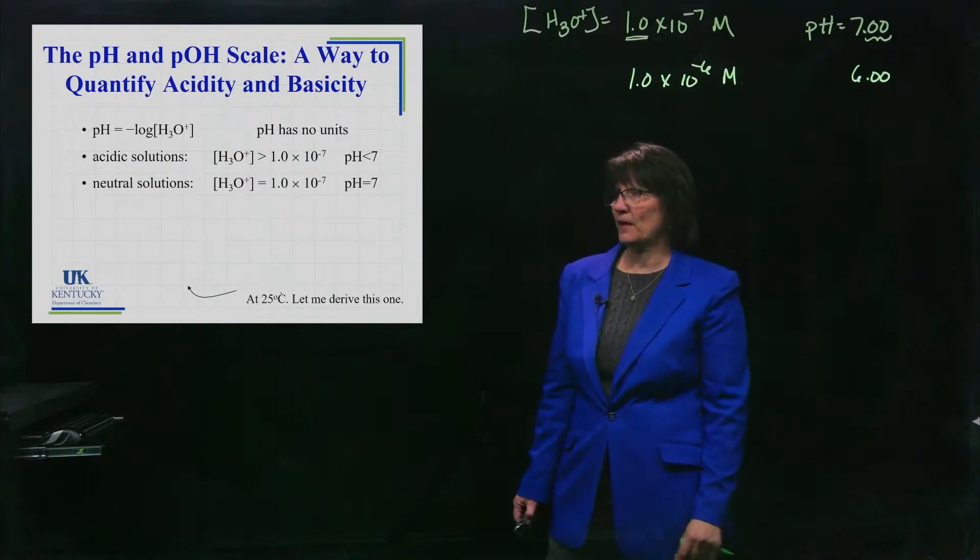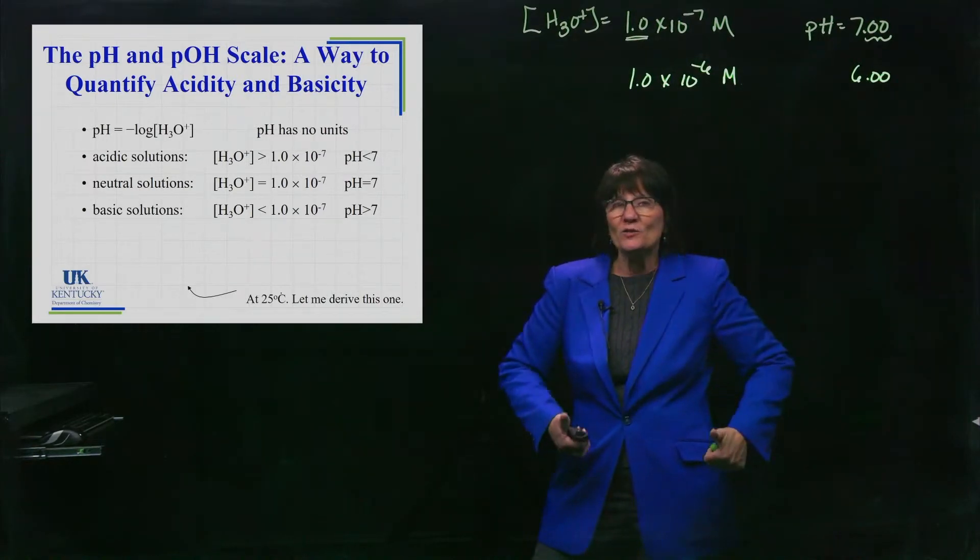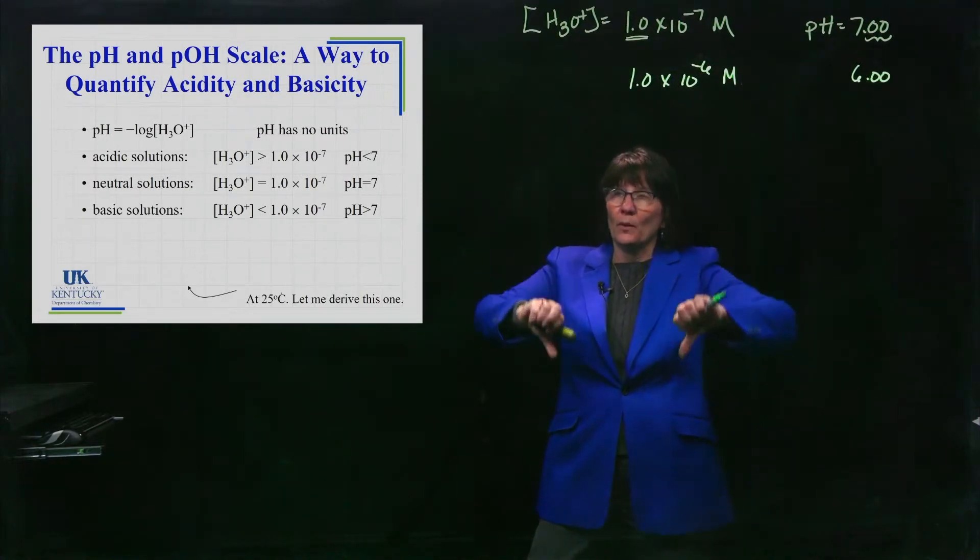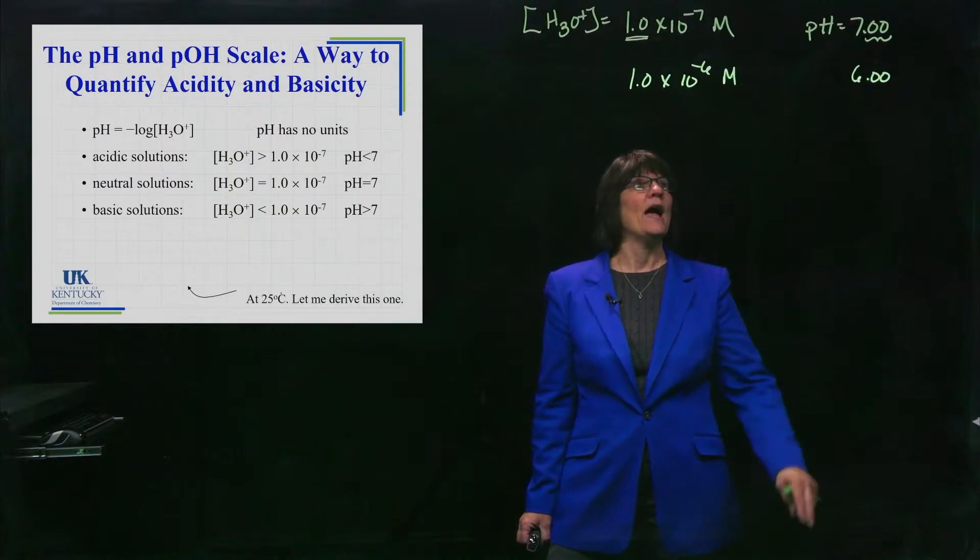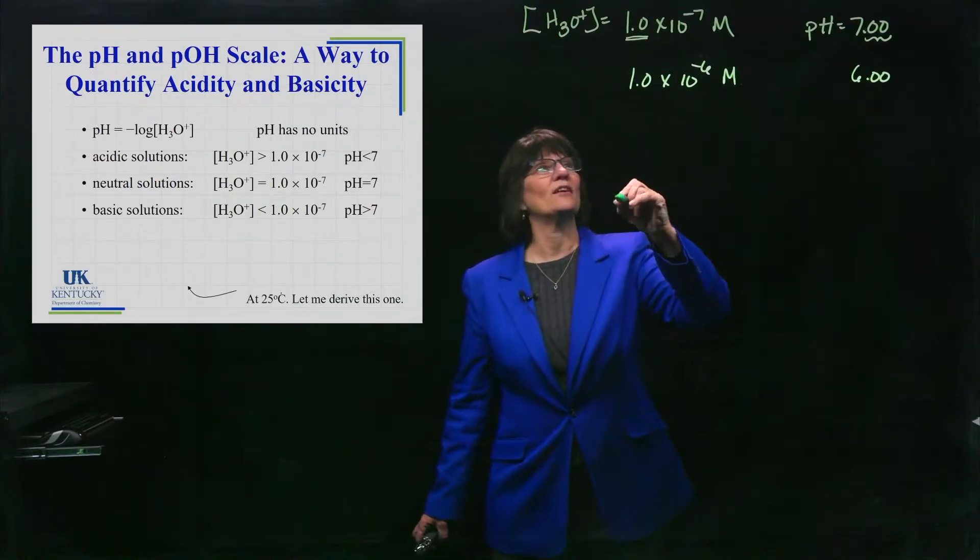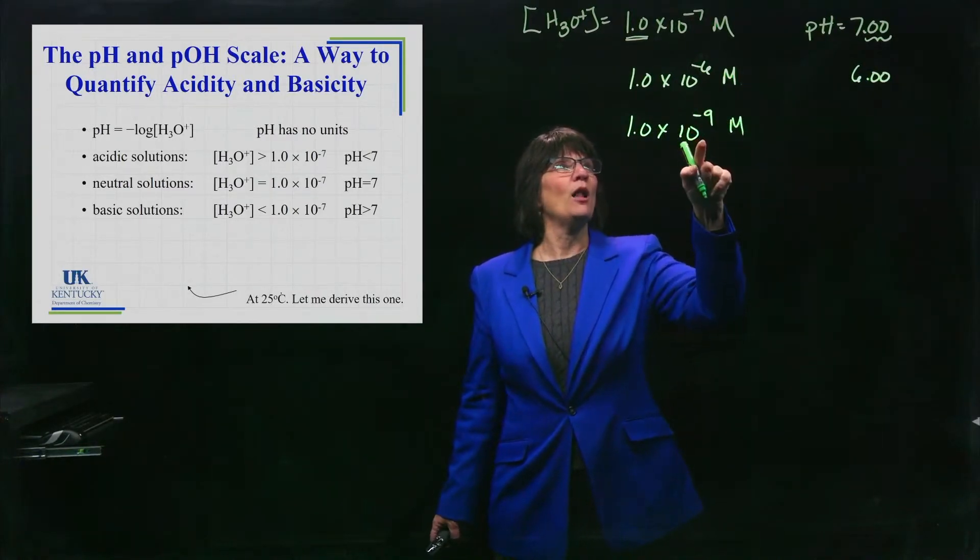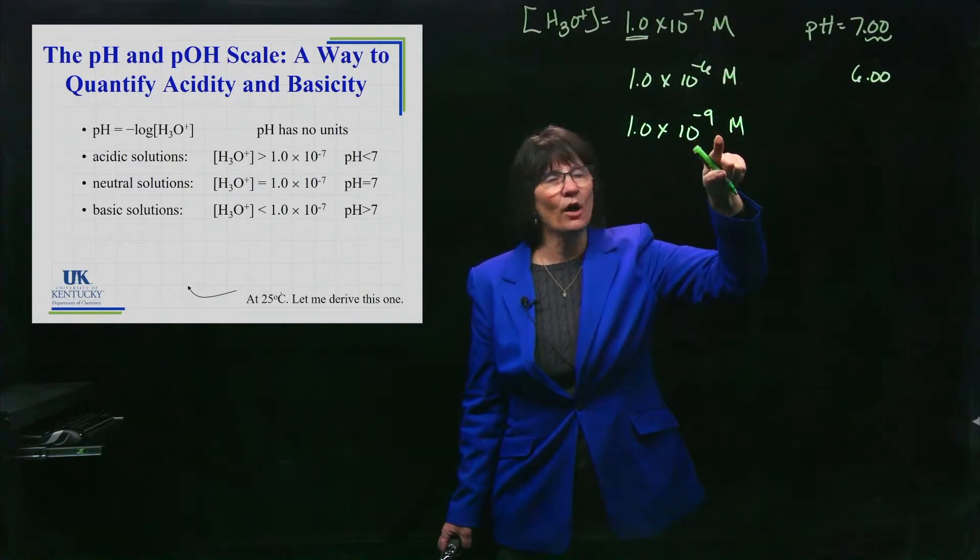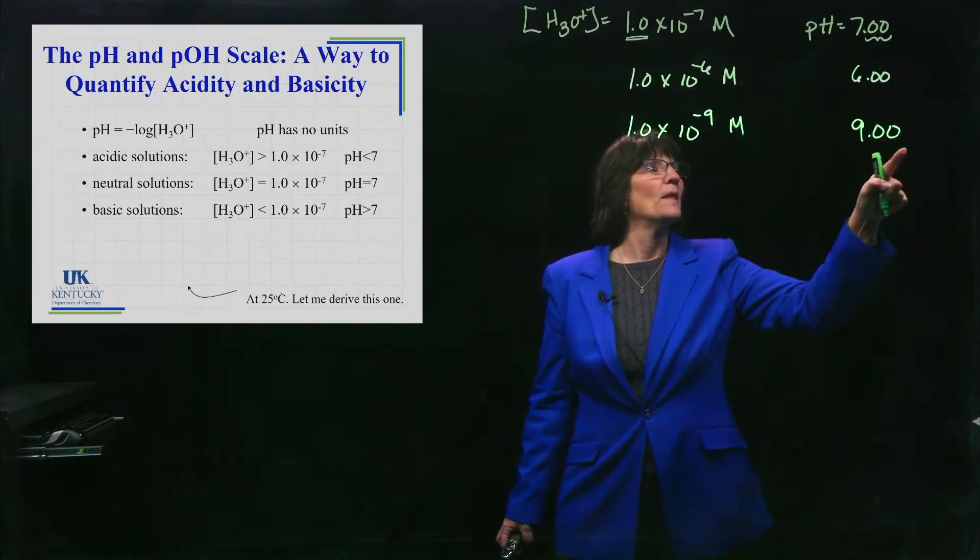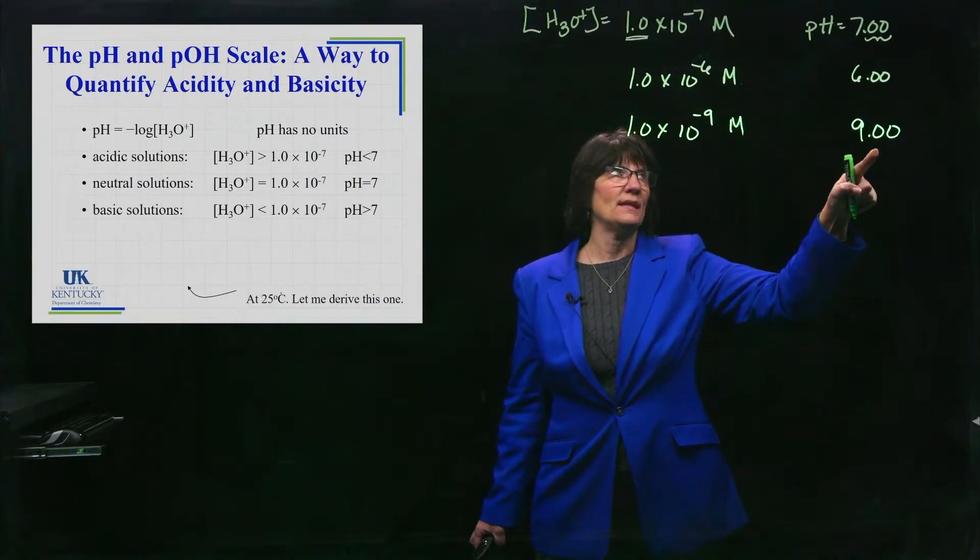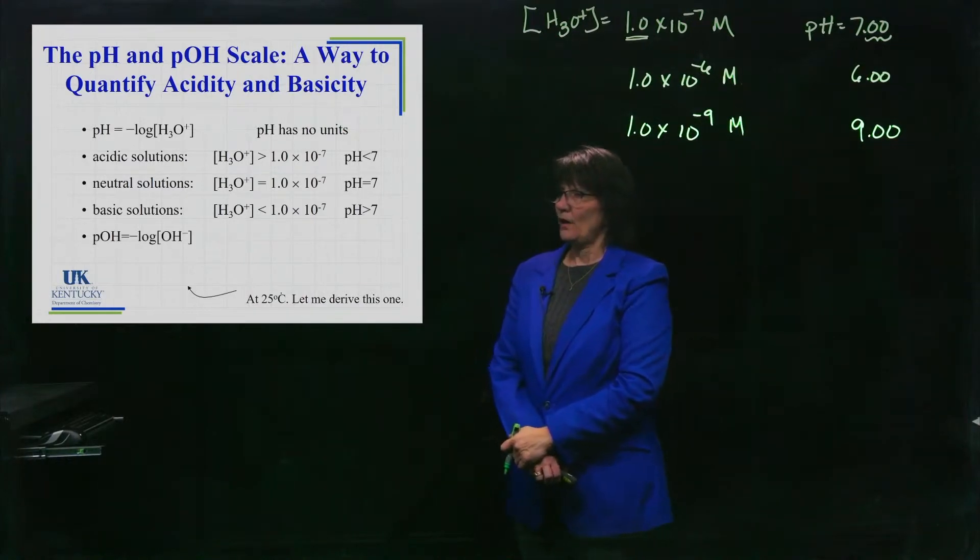What are you going to do when it's basic? When it's basic, you're adding OH minus. If OH minus is going up, then the H3O+ is going down. So, you're going to have concentrations of H3O+ that are less than 10 to the minus 7, and that would be pHs that are greater than 7. Would this be smaller than pure water? It is, and this is a pH of 9.00. Big pHs are basic. Little pHs are acidic.